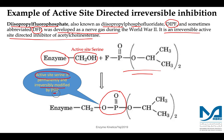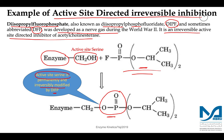Since the active site serine is covalently modified, the active site of the enzyme will not bind to substrate. The substrate in this case is acetylcholine, so it cannot be broken down into choline and acetate. Since the inhibitor irreversibly binds to the active site of the enzyme, it is classified as an active site directed irreversible inhibitor, and the inhibition is categorized as active site directed irreversible inhibition.